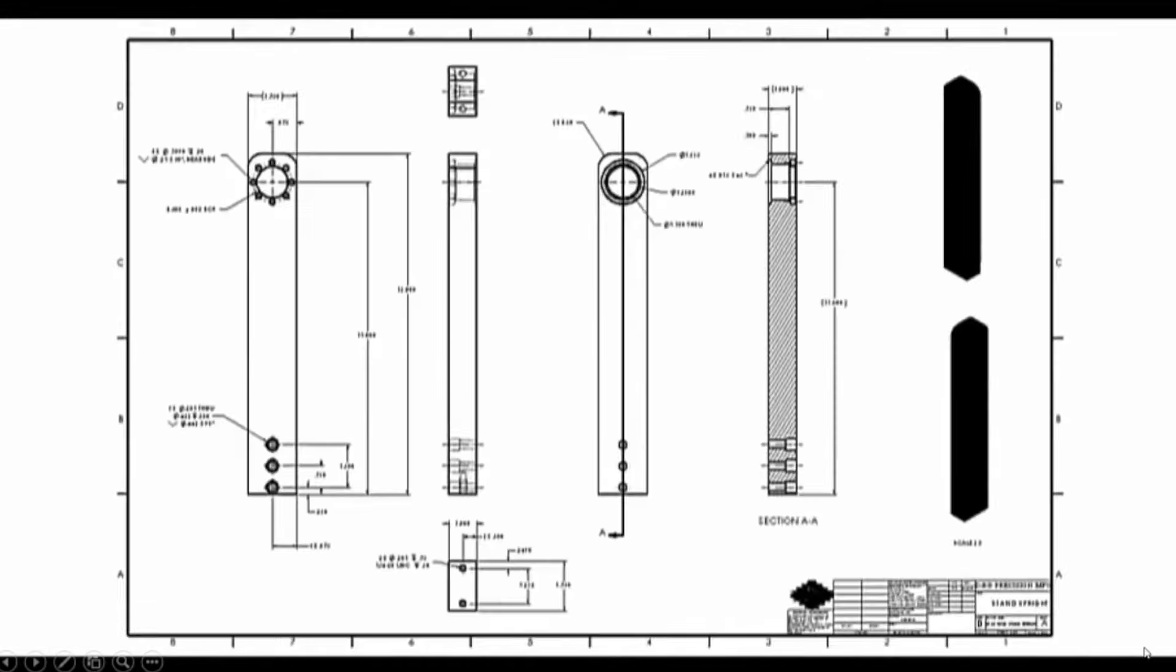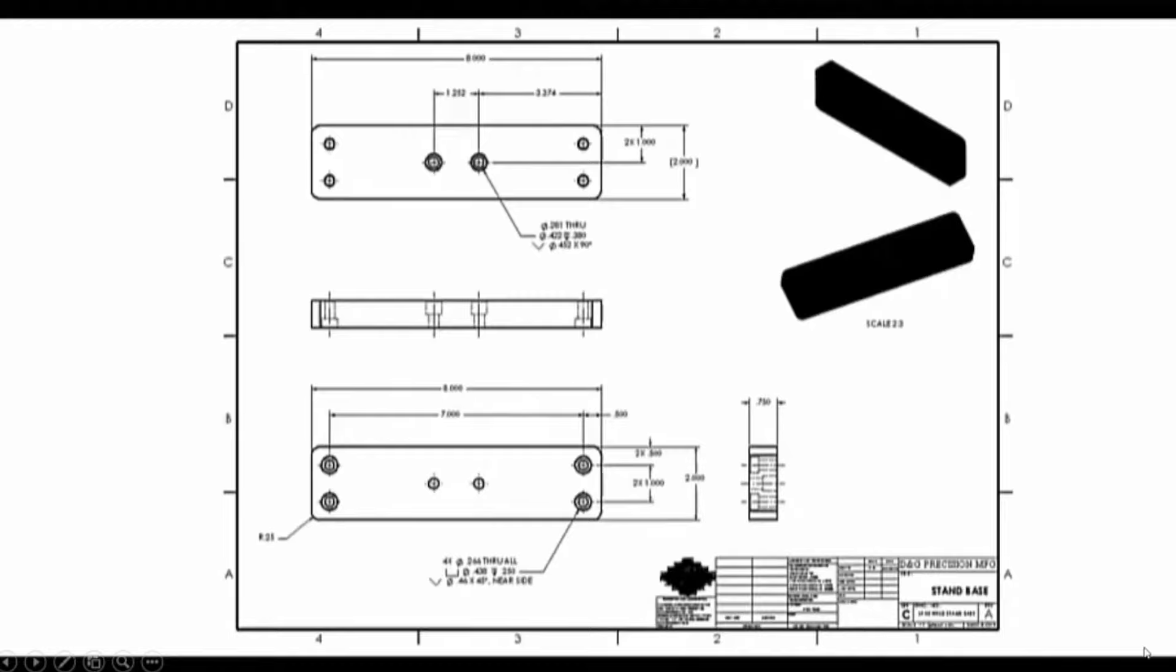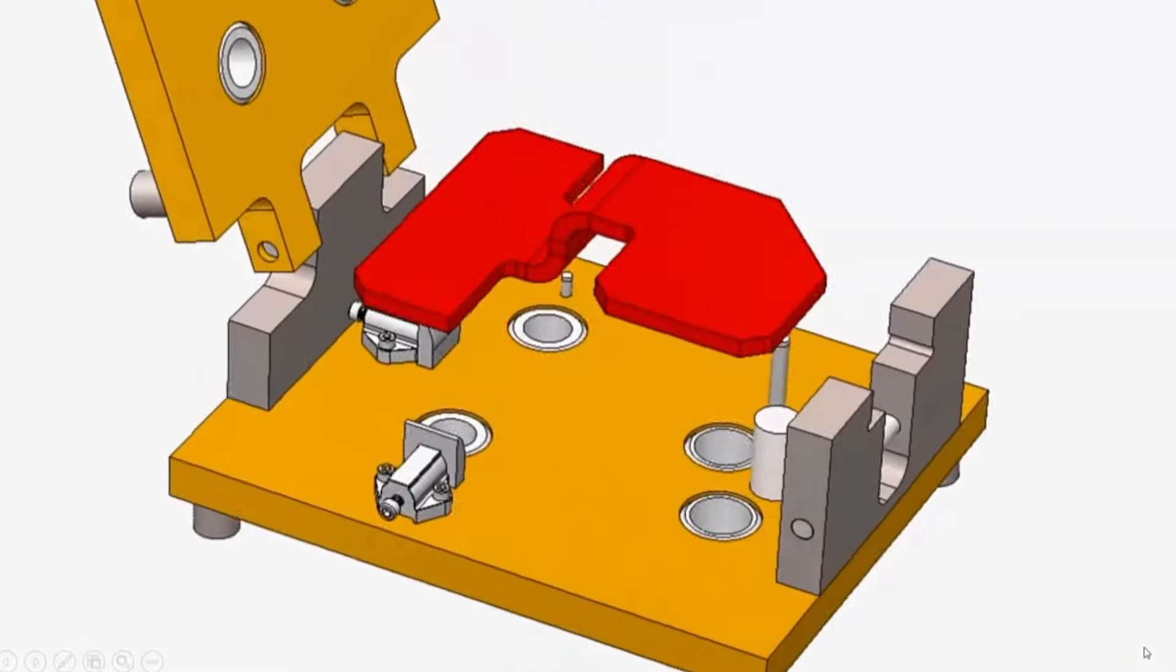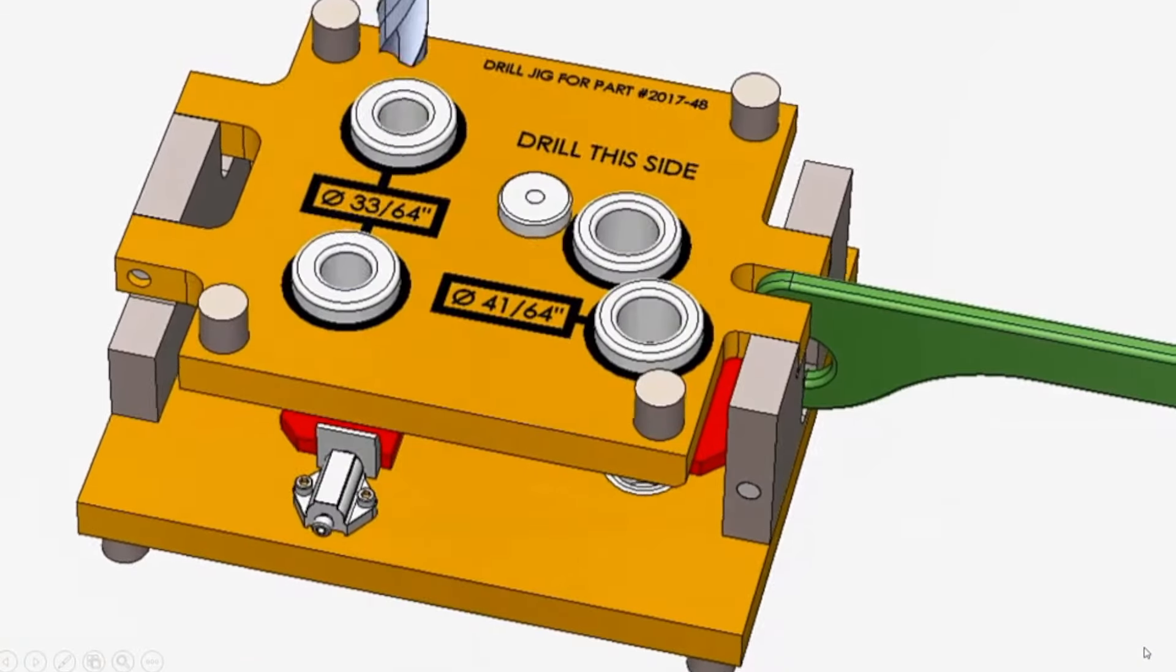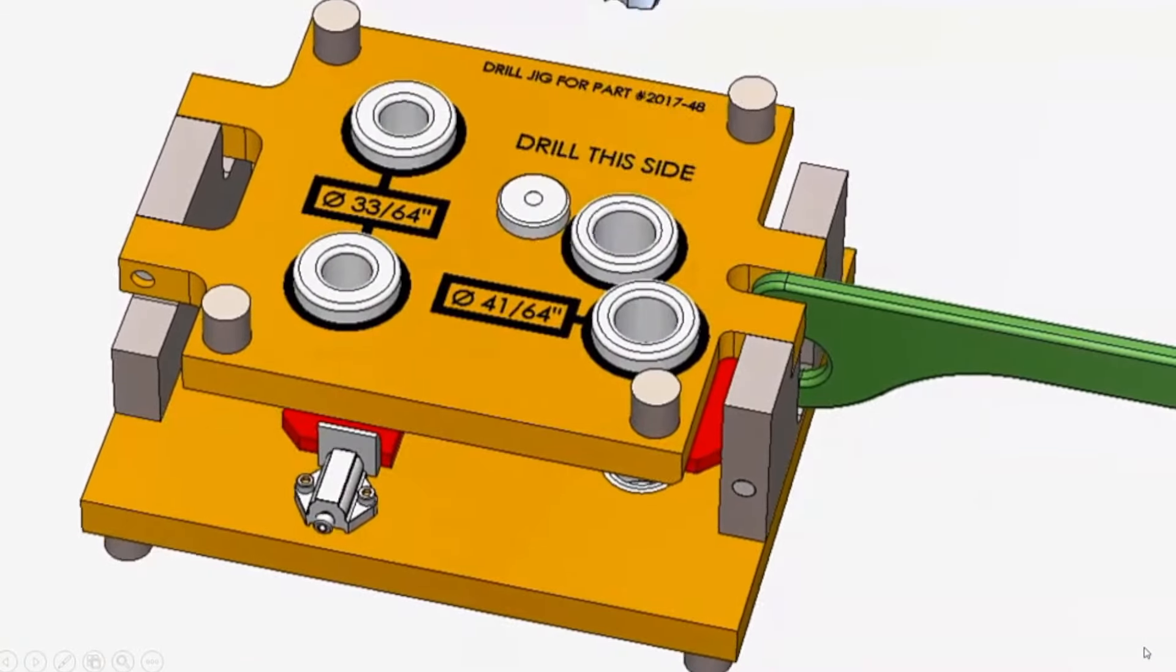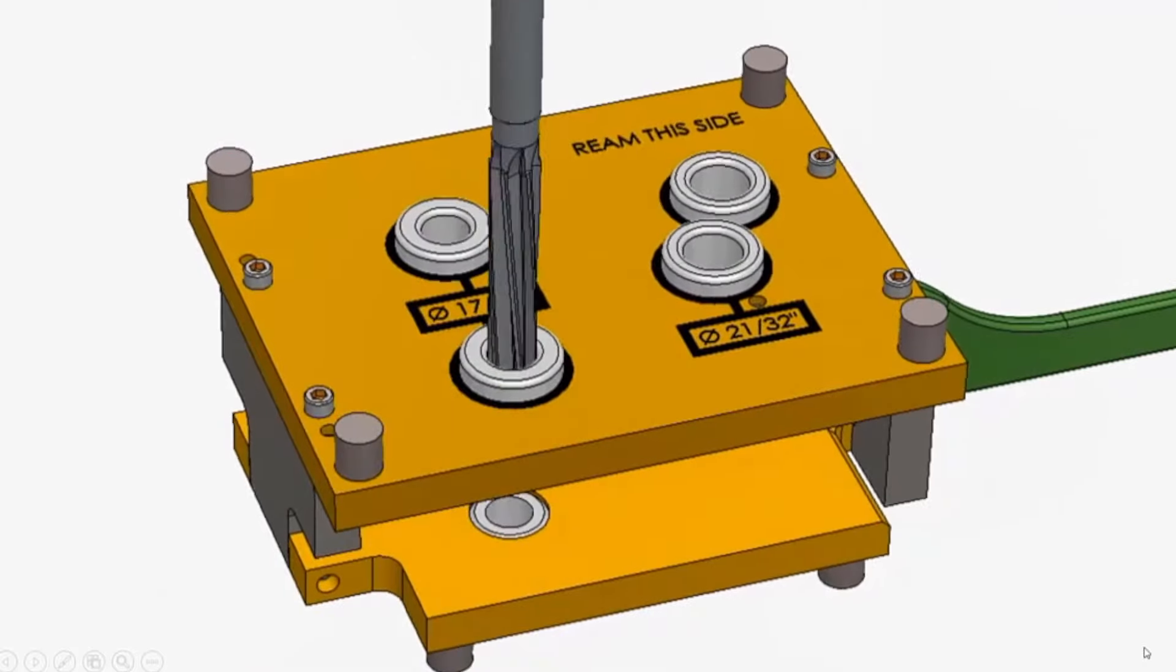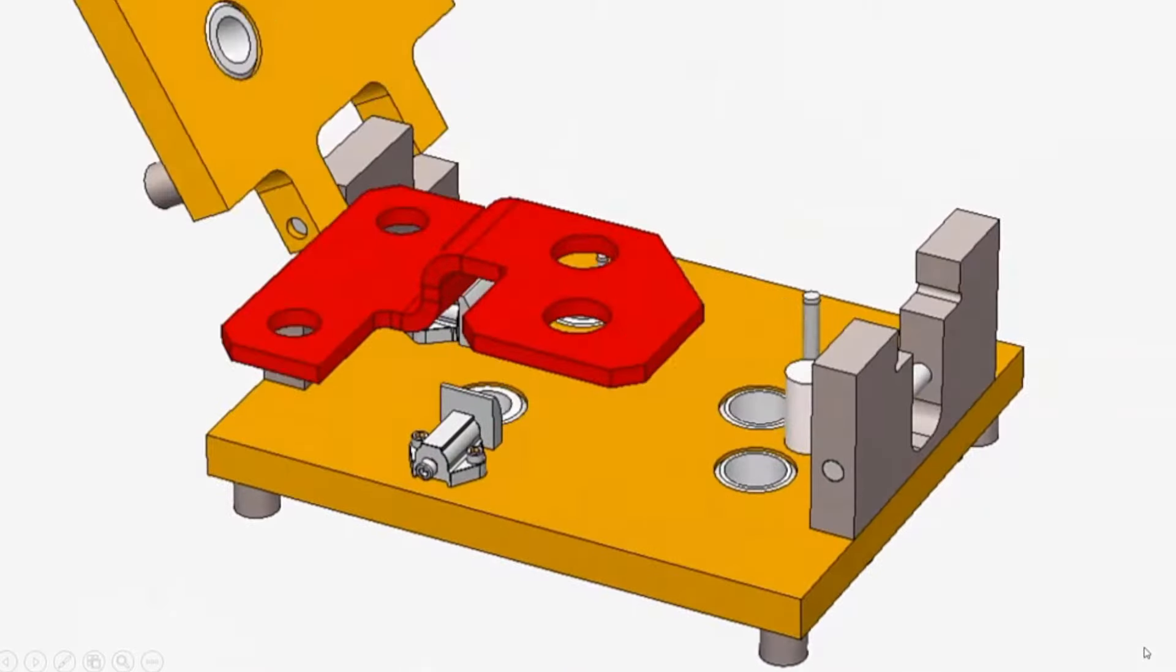This process is repeated for all course projects. In this leaf jig, the red piece part is held in the proper location and then the jig guides the drill. The part is flipped over and it guides the ream in the proper position.